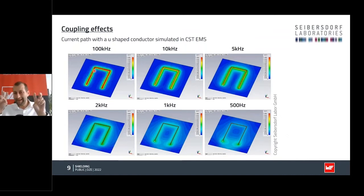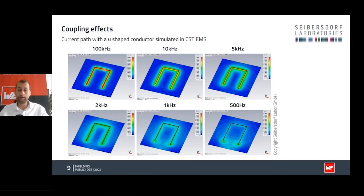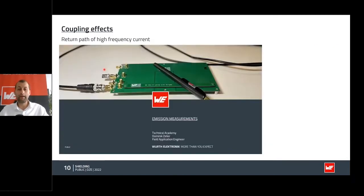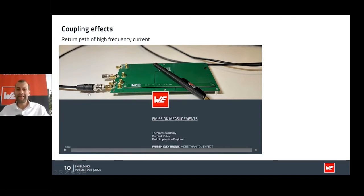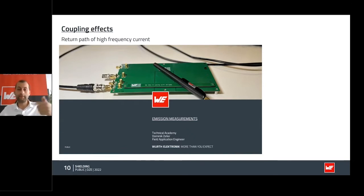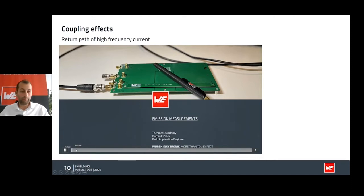When current is concentrated under the transmission line, you have current going in one direction and the return current going back in the opposite direction. Both create magnetic field lines that are opposite to each other, so most of them cancel each other out — or at least reduce the effects in the near vicinity quite a lot. This is what we want. I'll explain the measurement results I've prepared; the video quality isn't ideal, but the documentation and videos will also be shared.